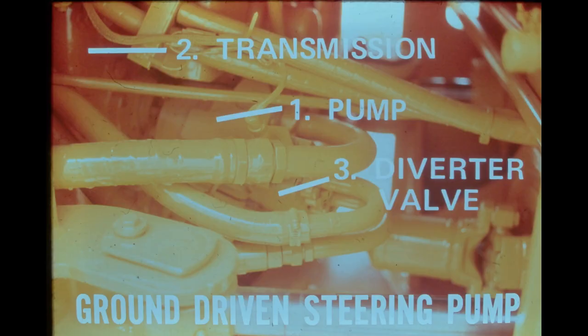If desired, the 540 can be equipped with an optional ground-driven steering pump. The pump, which is mounted on the transmission, is driven through the drivetrain by the machine's wheels, and when the 540 is moving, this pump is operating. During normal operating conditions, fluid supplied by the ground-driven pump circulates in a closed circuit through the pump's diverter valve and back to the reservoir. Also during normal operation, fluid from the standard steering system positions the diverter valve spool in a closed position. Should the engine or hydraulic steering pump malfunction, the diverter valve will shift and automatically route the ground-driven steering pump flow to the steering cylinders via the steering valve, thus allowing the operator to safely steer the machine until it can be stopped.